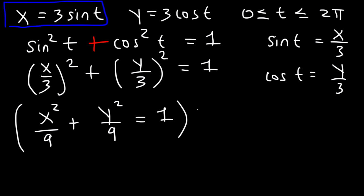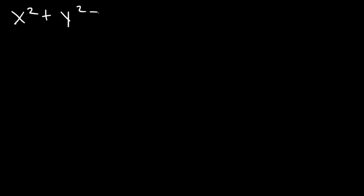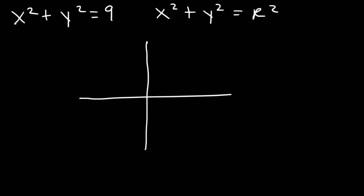We have x²/9 + y²/9 = 1. Multiplying everything by 9 gives x² + y² = 9. This is the equation of a circle in the form x² + y² = r², so we have a circle centered at the origin with radius 3.